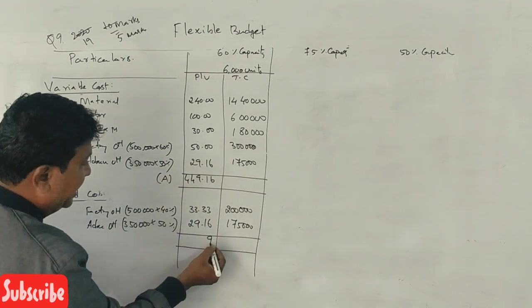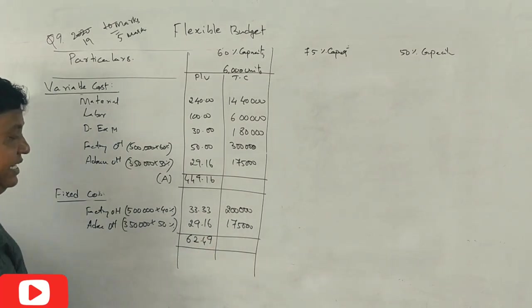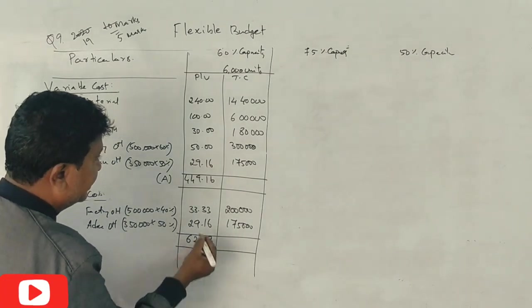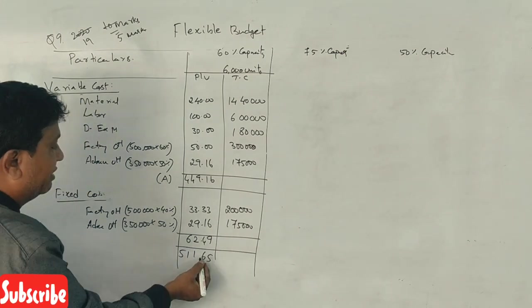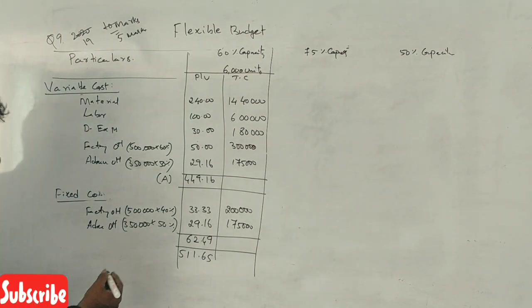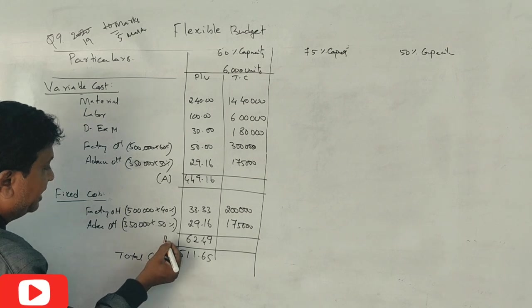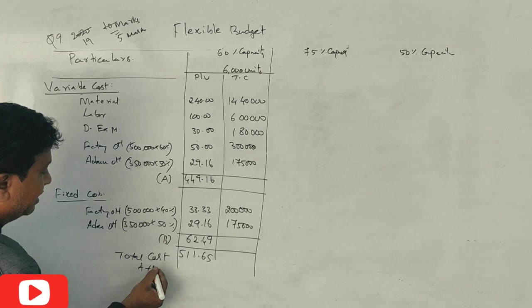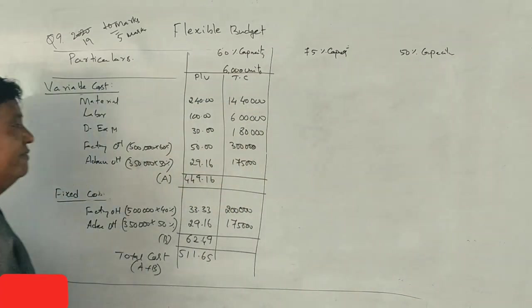Administration variable 29.16 into 6,000. Total per unit rate 449.16. This is total variable cost at 26 lakhs 95,000. Per unit 449.16.